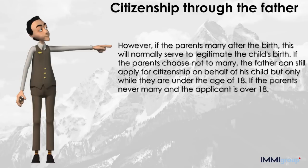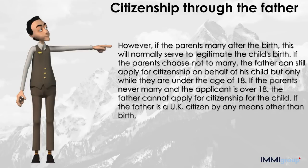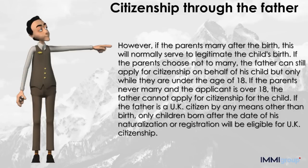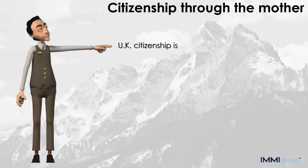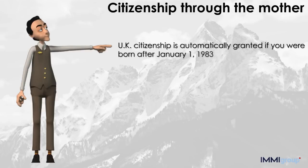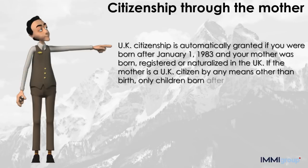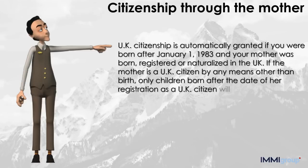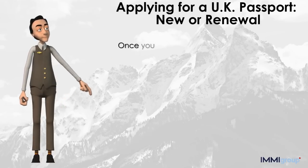If the parents choose not to marry, the father can still apply for citizenship on behalf of his child, but only while they are under the age of 18. If the parents never marry and the applicant is over 18, the father cannot apply for citizenship for the child. If the father is a UK citizen by means other than birth, only children born after the date of his naturalization or registration will be eligible. UK citizenship is automatically granted if you were born after January 1st, 1983 and your mother was born, registered, or naturalized in the UK. If the mother is a UK citizen by any means other than birth, only children born after the date of her registration will be eligible.